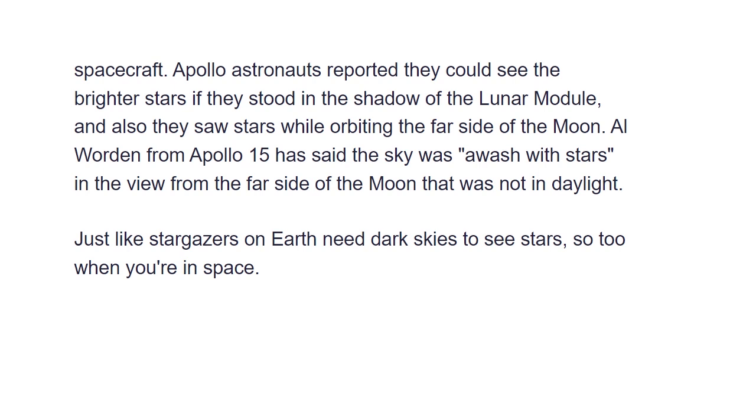How did some astronauts on the moon see the stars? There are two ways. Either you are on the far side of the moon where the sun is not visible in the sky. Some astronauts reported seeing so many stars with nothing to wash them out — they couldn't even recognize the constellations because there were just so many. These astronauts knew their constellations well because they used them for navigation, but still couldn't recognize the popular ones due to the sheer number of stars visible.